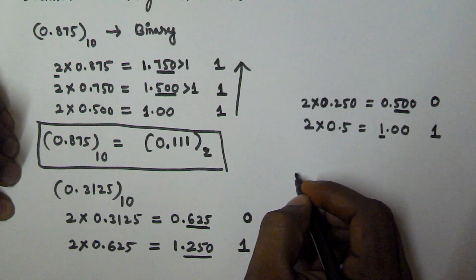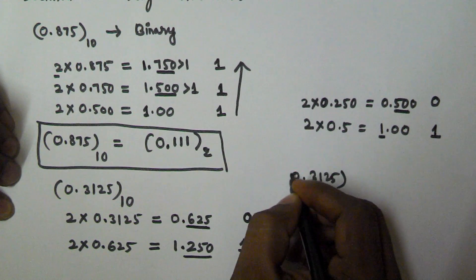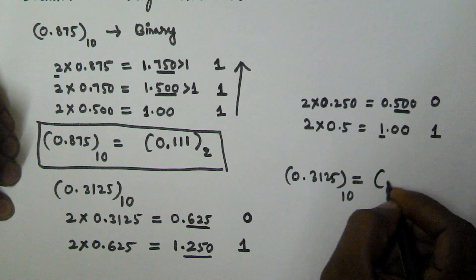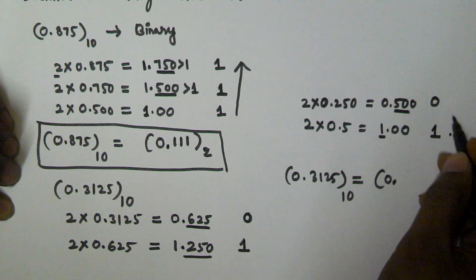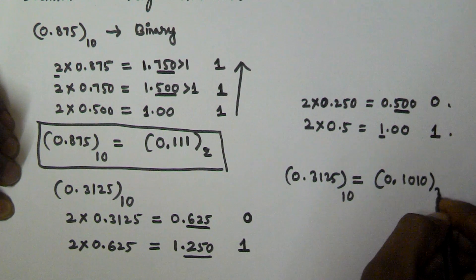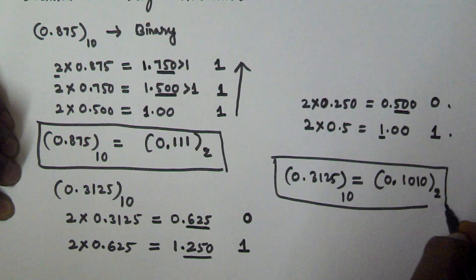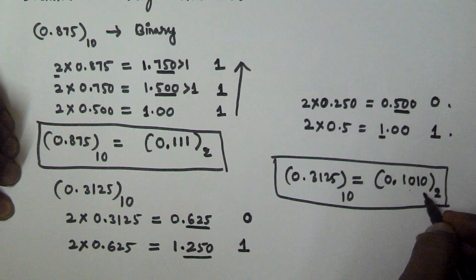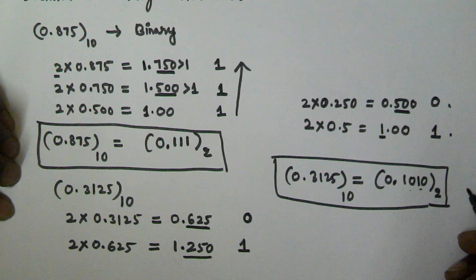So 0.3125 in decimal is equivalent to reading the values from bottom to top: 1, 0, 1, 0. So 0.3125 in decimal equals 0.1010 in binary. I hope you got this. Thank you very much for watching this video. Please subscribe to my channel.